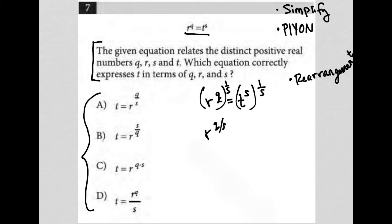Whenever I have an exponent and another exponent, we just multiply the exponents together, and this gives me q over s.